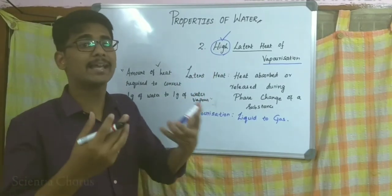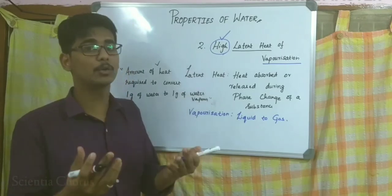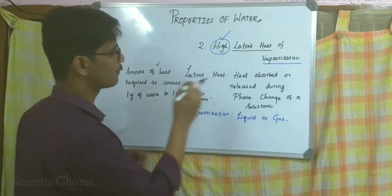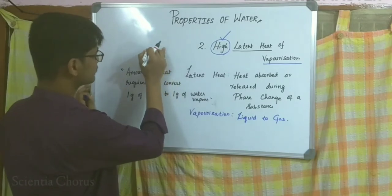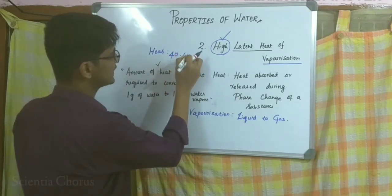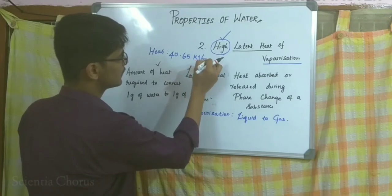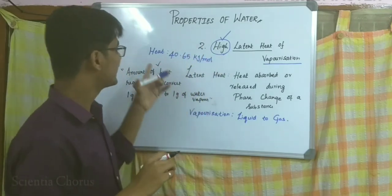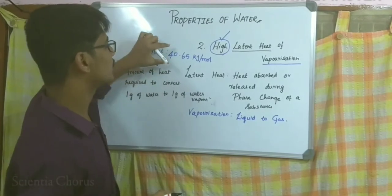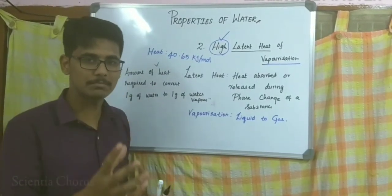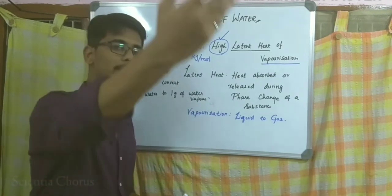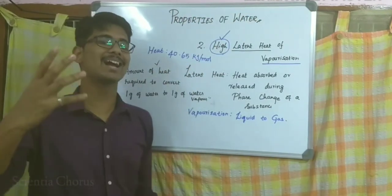The latent heat of vaporization of water is around 40.65 kilojoules per mole. This is the amount of heat energy required for water molecules to convert to water vapor, and this is actually a high amount of energy.